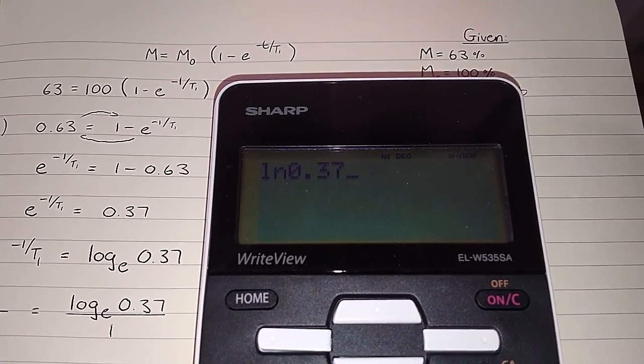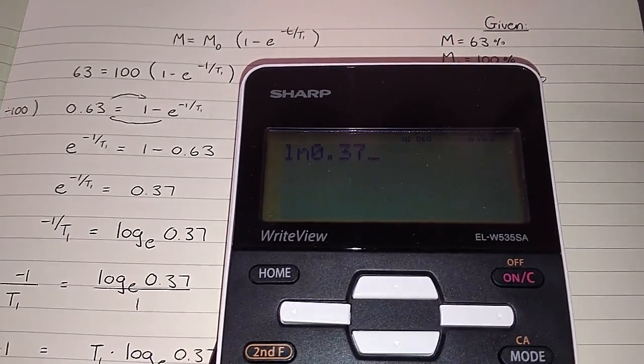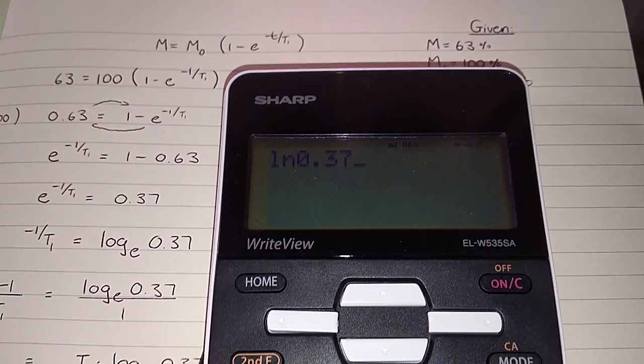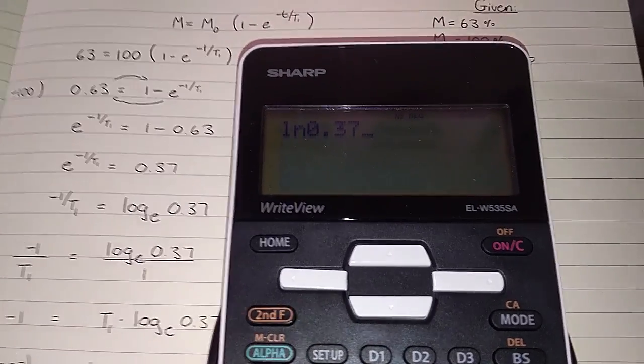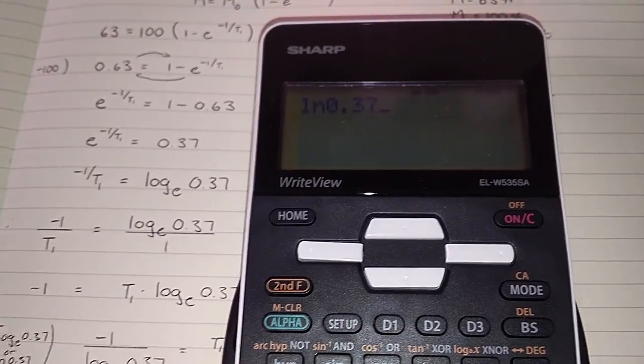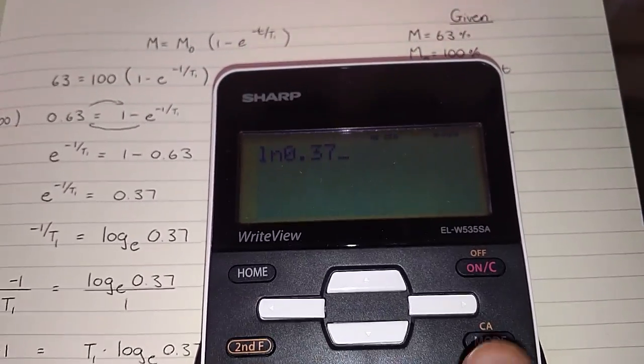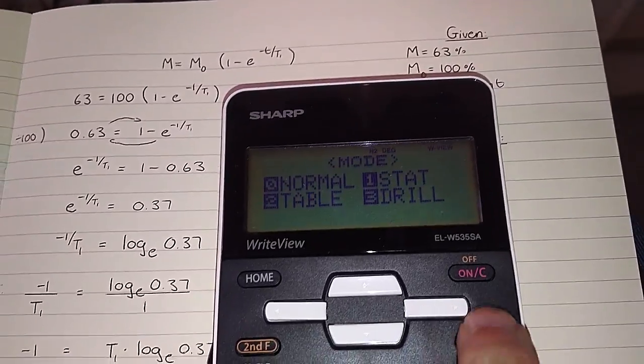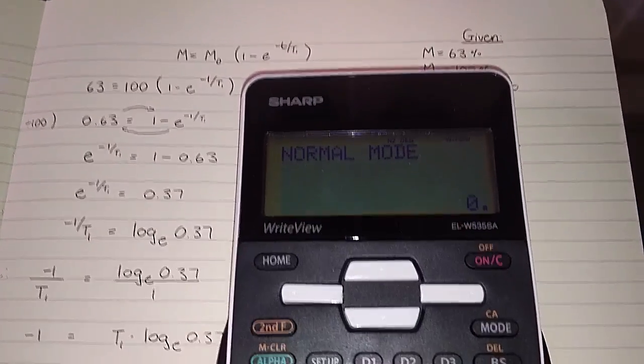And yeah, it's simple as that. That's the same as saying log base e 0.37, and you simply put all those things into your calculator, and that gives you your answer. So let's just have a quick look at that being done.